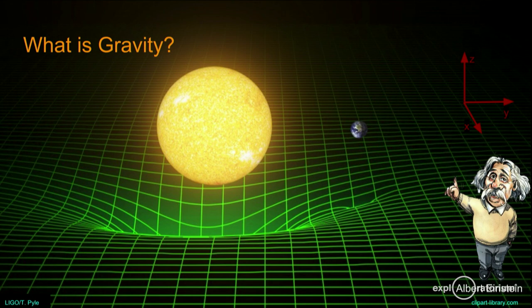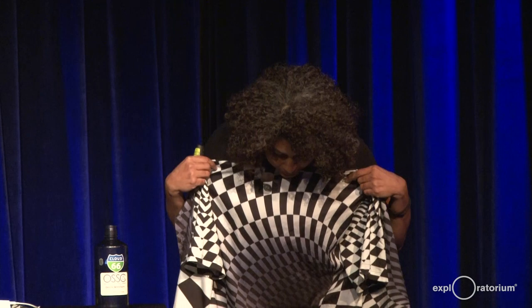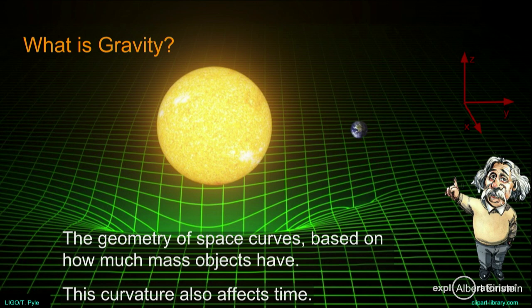Then 250 years later, Albert Einstein said: what you're missing is that space isn't just this flat thing that doesn't interact. Space is actually like a fabric — a three-dimensional thing that can actually curve, stretch, and compress. What Einstein said is the geometry of space actually curves based on how much mass you have. It's not that two objects are pulling on each other instantaneously; it's that space itself is moving around the object, so other objects interact with the space, causing them to move.